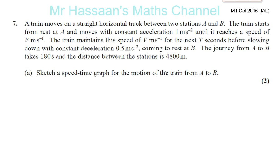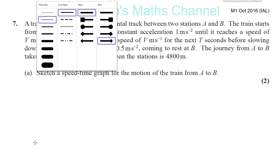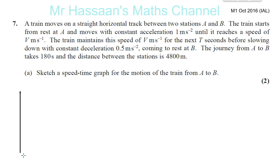Sketch a speed time graph of the motion of the train from A to B. So let's go ahead and do that. Speed against time. It tells us that it starts off at rest and moves with constant acceleration 1 m per second squared until it reaches a speed of V m per second. So let's just show that. It starts at rest, starts from zero.